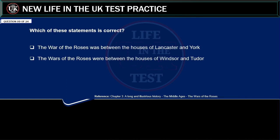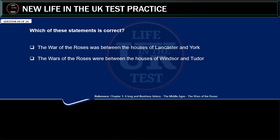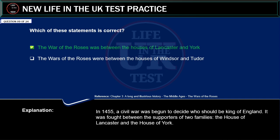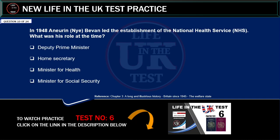Which of these statements is correct? The War of the Roses was between the houses of Lancaster and York. Or: the Wars of the Roses were between the houses of Windsor and Tudor. Correct answer: the War of the Roses was between the houses of Lancaster and York. Explanation: in 1455, a civil war was begun to decide who should be King of England. It was fought between the supporters of two families — the House of Lancaster and the House of York.